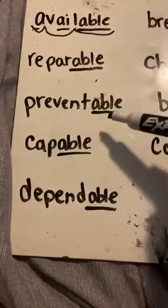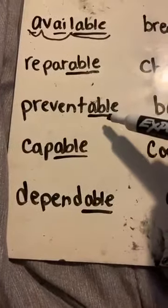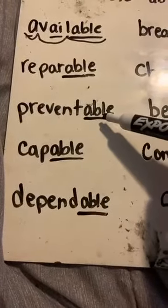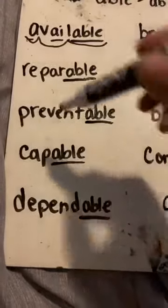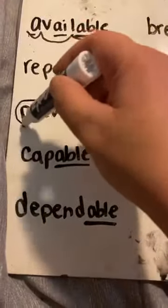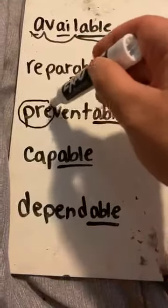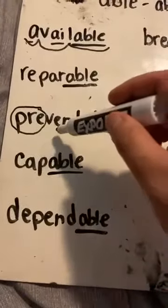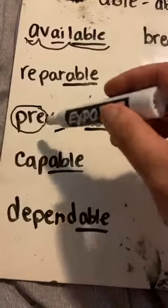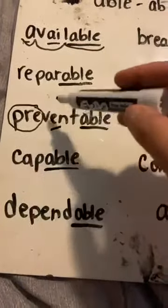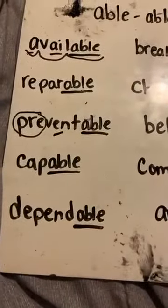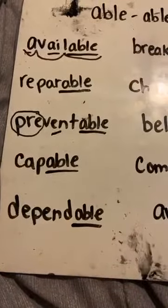Next word. Ooh, this one has a prefix too, doesn't it? We know that P-R-E, so I'm going to circle that because that's my prefix, and then I'm going to underline the E. PRE-VENT-ABLE, PREVENTABLE — that means that it's able to be prevented. Very good.